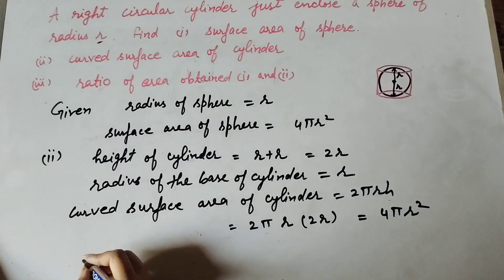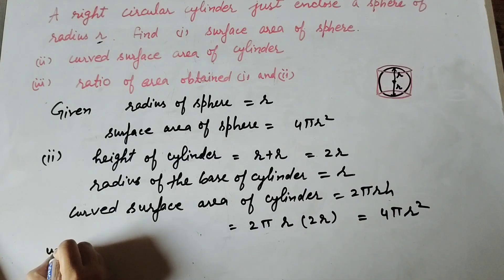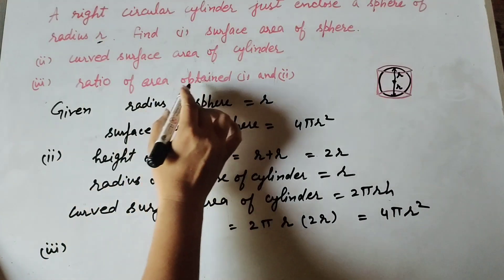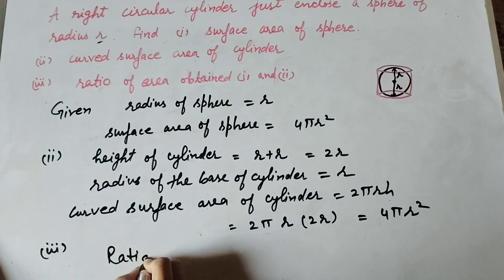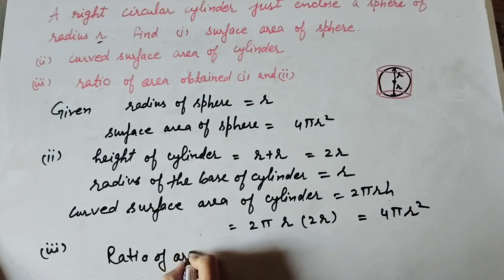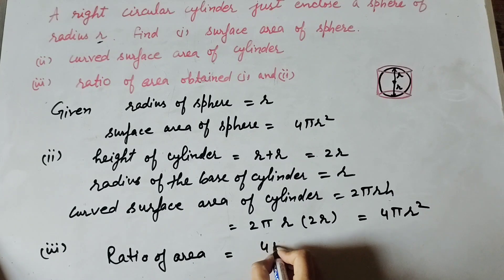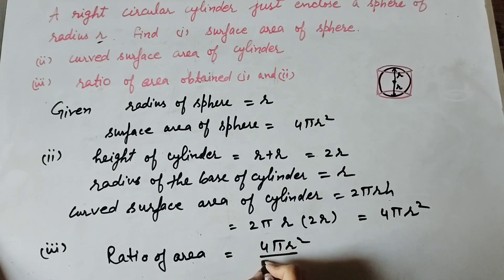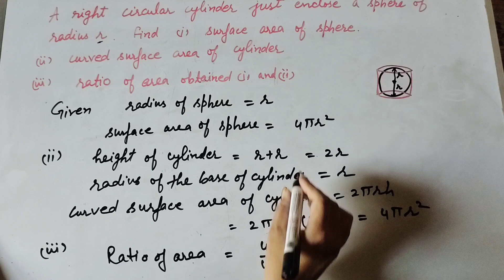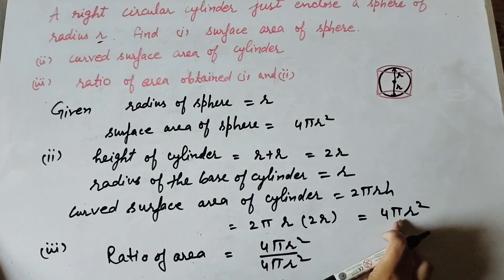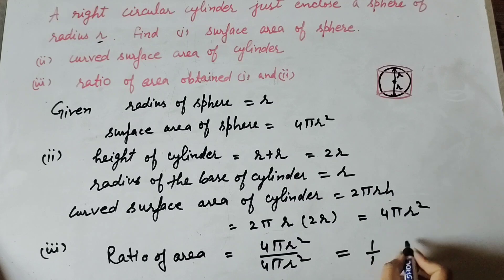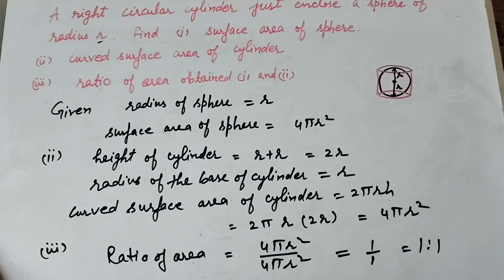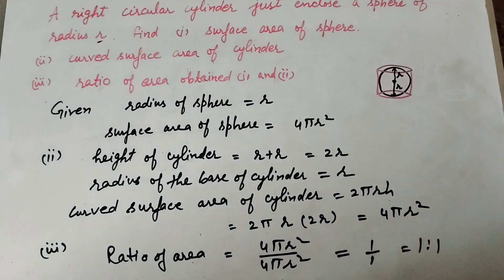The curved surface area of the cylinder is 4πr². Now we move to the third part: the ratio of the areas obtained in one and two. The surface area of the sphere is 4πr² and the curved surface area of the cylinder is 4πr², so the ratio is equal to 1:1. Thanks for watching — like, comment, and share my video.